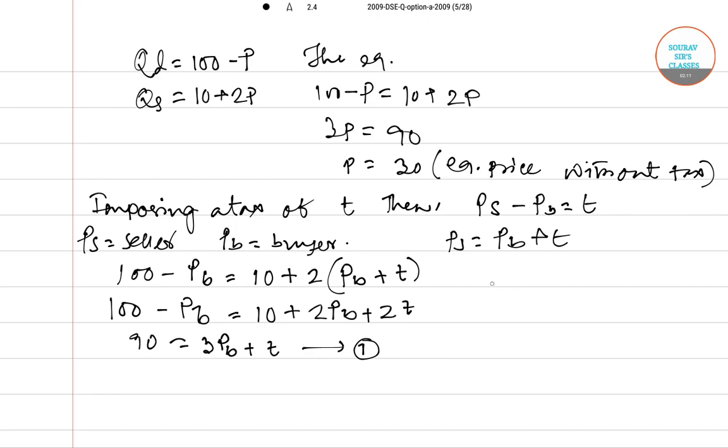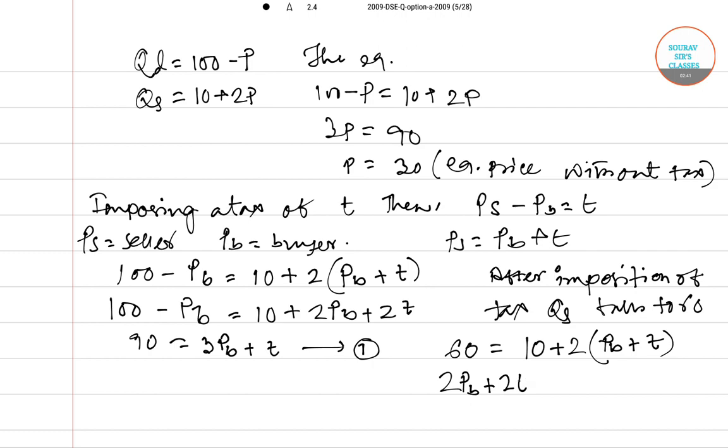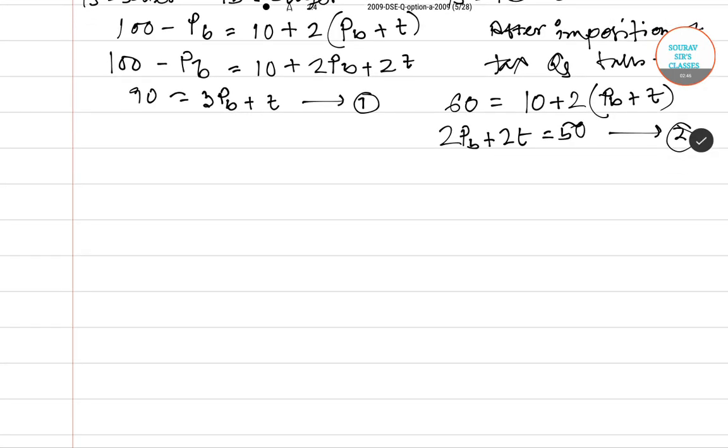Then you have another information that after imposition of tax, the quantity is 60. So 60 equals 10 plus 2 times PB plus T. So we have 2PB plus 2T equals 50. This is equation number two.